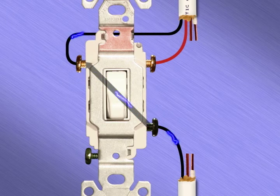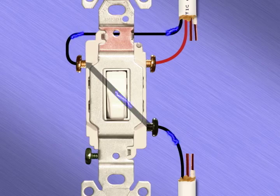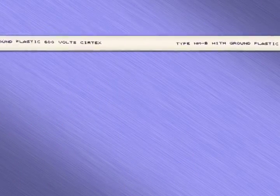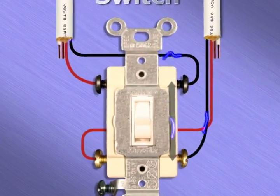With the switch in the down position, the current will pass through to the left traveler terminal and travel along the black traveler wire until it reaches our four-way switch.